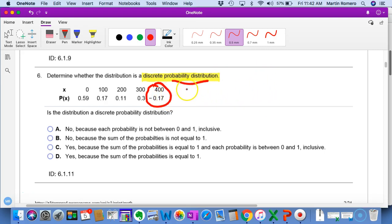The sum of these has to equal one, but these values have to be probabilities, and probabilities are never negative. So in this case, this is not a probability distribution or discrete probability distribution because each probability is not between zero and one. There's our reason right there.